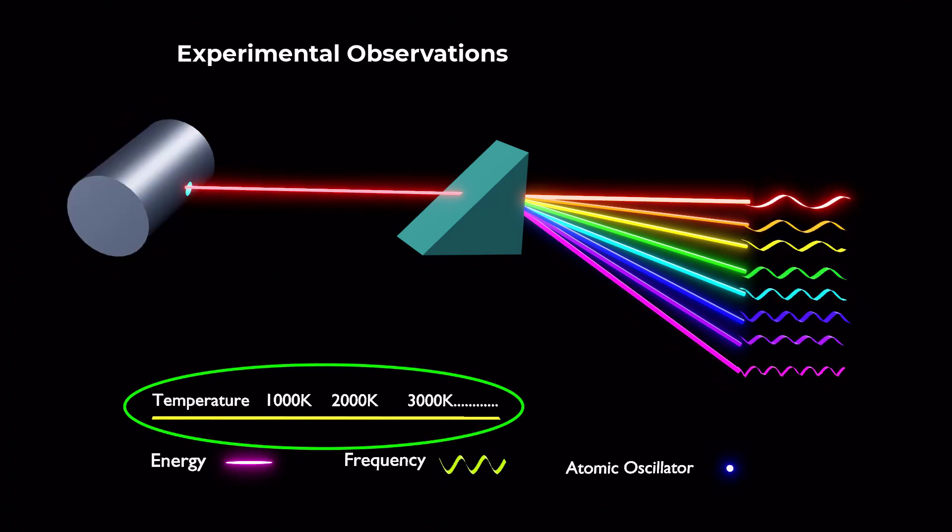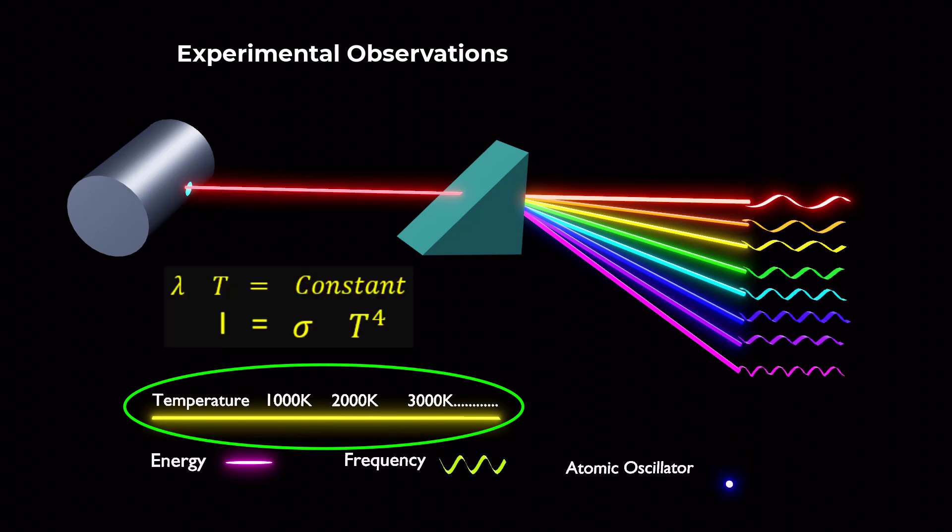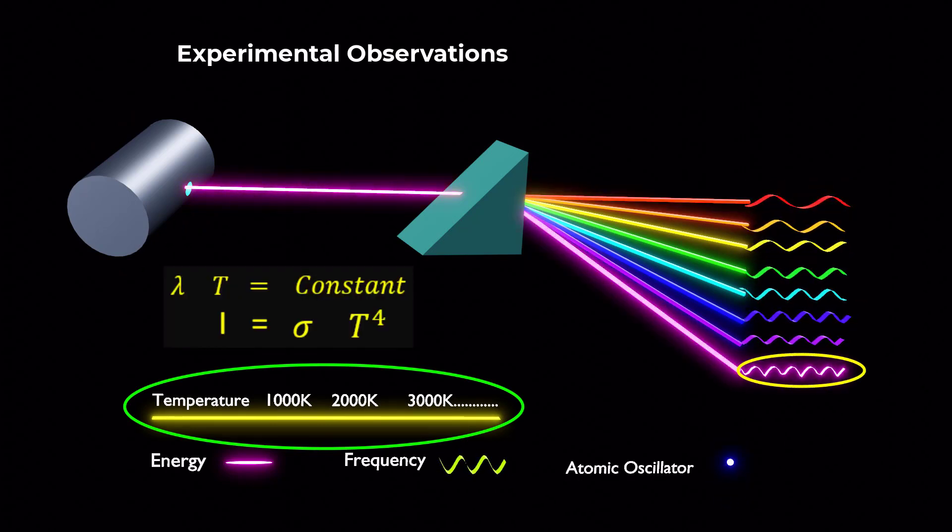As the temperature of a black body increases, it radiates more energy, and the peak wavelength shifts towards shorter wavelengths.